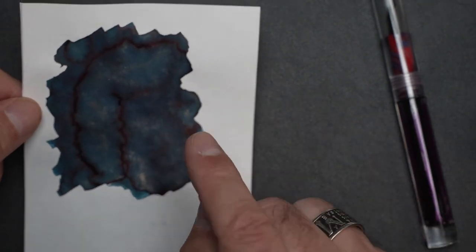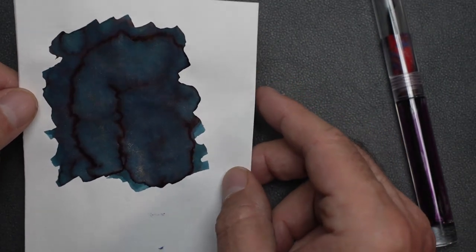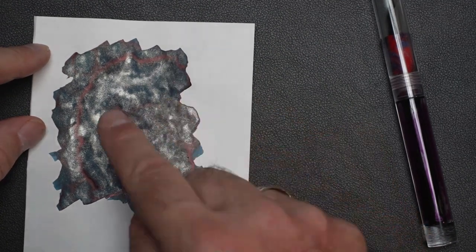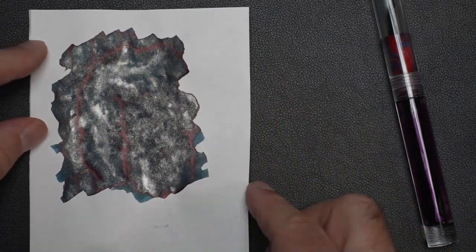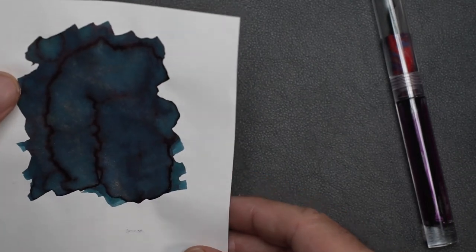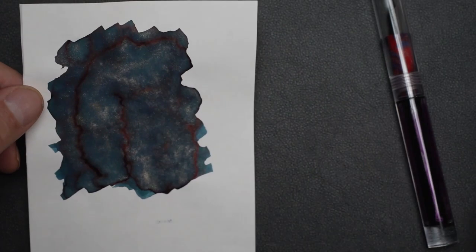Here's the red sheen. So that's Glistening Glass. You can see it has the shimmer. There's very little shading. And it has red sheen, as you can see. So that's the shimmering ink. Very interesting ink, in my opinion.